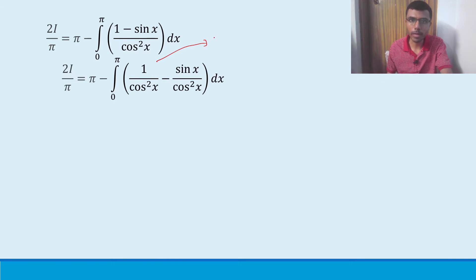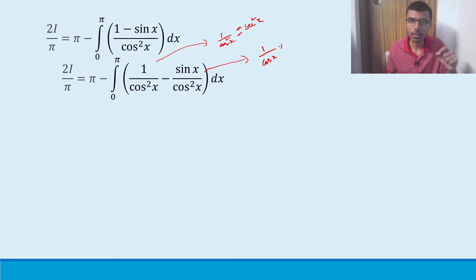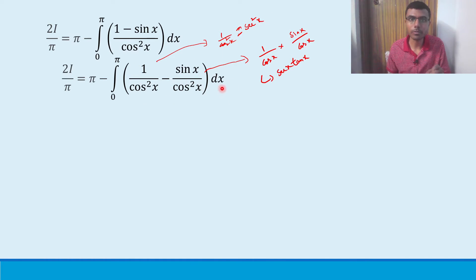Splitting the denominator: 1/cos²(x) = sec²(x), and sin(x)/cos²(x) = (1/cos(x))·(sin(x)/cos(x)) = sec(x)·tan(x). So 2I/π = π minus integral from 0 to π of [sec²(x) - sec(x)·tan(x)] dx. Taking the minus sign inside, the integral becomes: integral of sec(x)·tan(x) dx minus integral of sec²(x) dx.